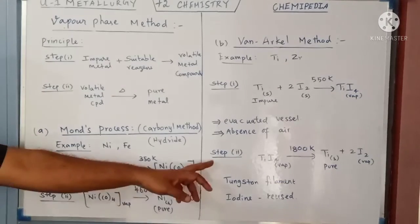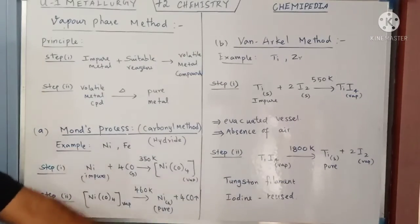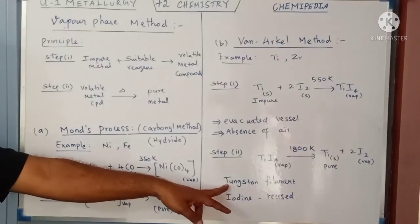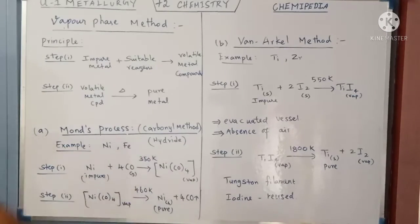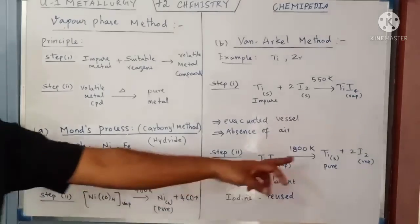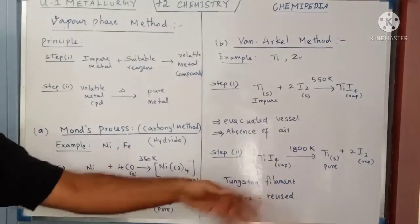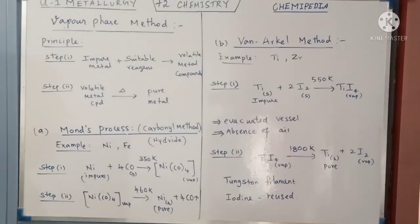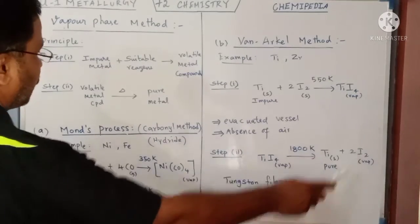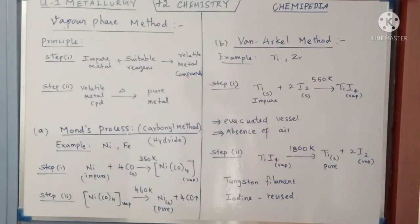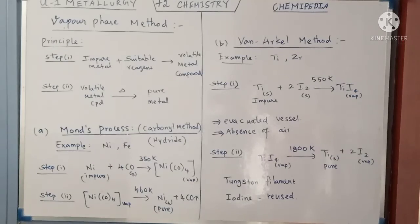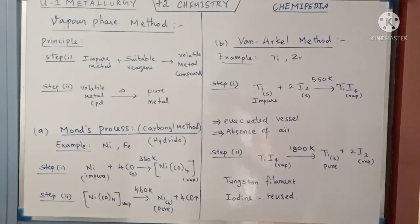The thermal decomposition of titanium tetraiodide is carried out in the presence of a tungsten filament, so the pure titanium deposits on the tungsten filament and can be collected from its surface. The iodine vapors released can be reused for the further process. This is the Van Arkel method, the second vapor phase refining method. Thank you.